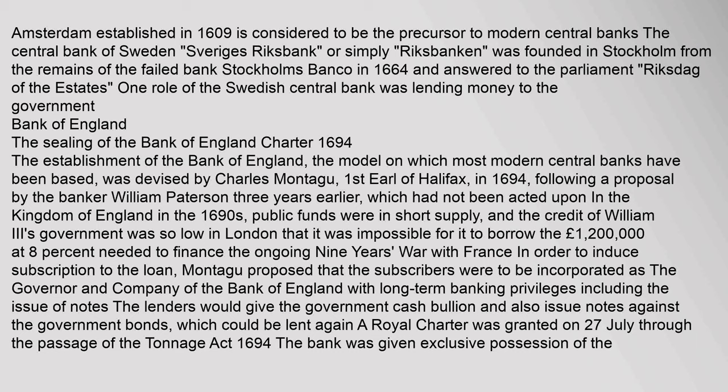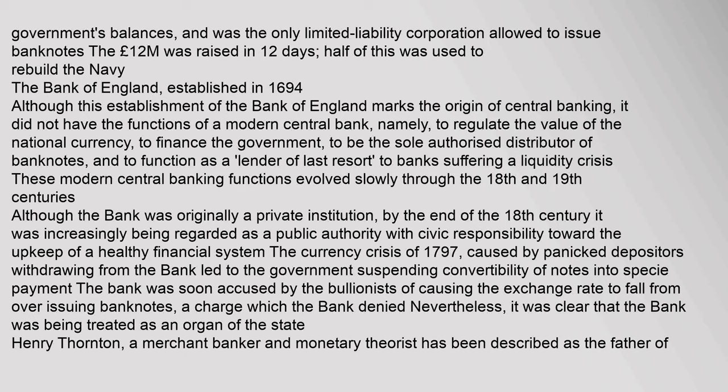The lenders would give the government cash and bullion and also issue notes against the government bonds, which could be lent again. A royal charter was granted on 27 July through the passage of the Tonnage Act 1694. The bank was given exclusive possession of the government's balances, and was the only limited liability corporation allowed to issue banknotes. The £1,200,000 was raised in 12 days; half of this was used to rebuild the navy. Although this establishment of the Bank of England marks the origin of central banking, it did not have the functions of a modern central bank — namely, to regulate the value of the national currency, to finance the government, to be the sole authorised distributor of banknotes, and to function as a lender of last resort to banks suffering a liquidity crisis.